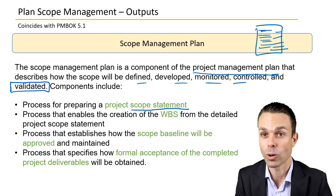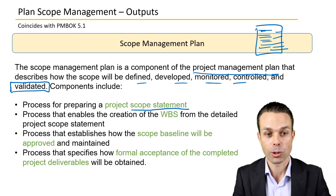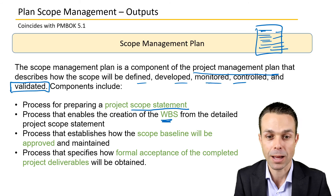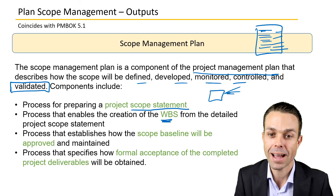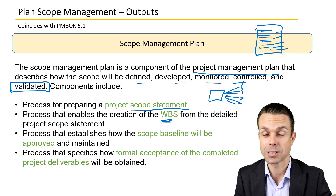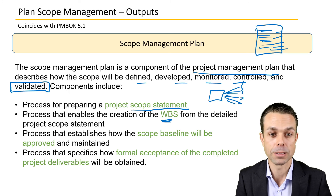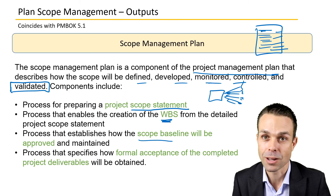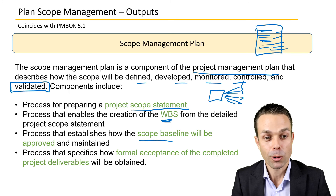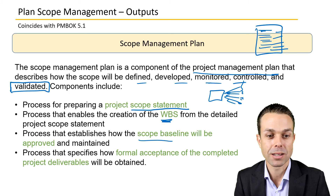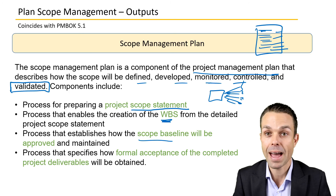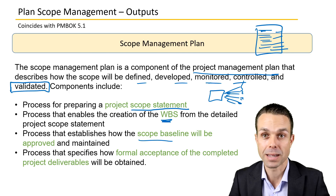Components of the scope management plan include: the process for preparing the project scope statement, the process that enables creation of the work breakdown structure from the detailed scope statement, and the process that establishes how the scope baseline will be approved and maintained — for example, whether the project sponsor or a steering committee needs to approve it. There is also a process specifying how formal acceptance of completed project deliverables will be obtained, which is the Validate Scope process.